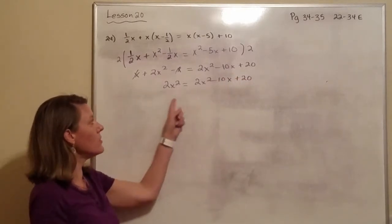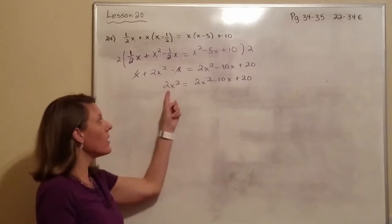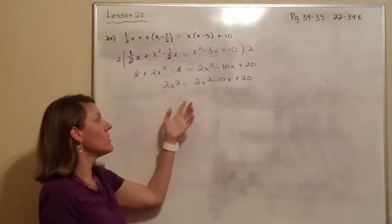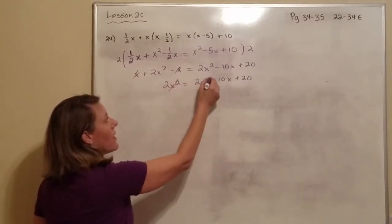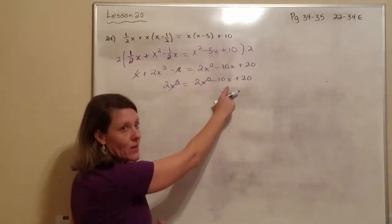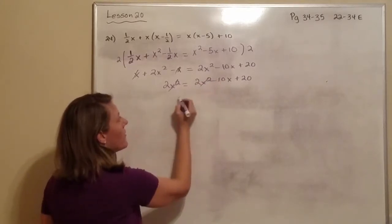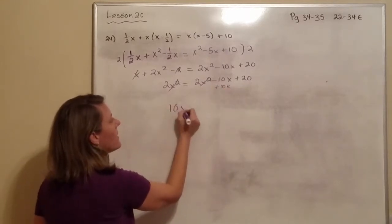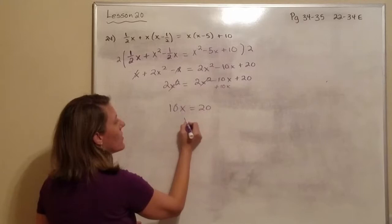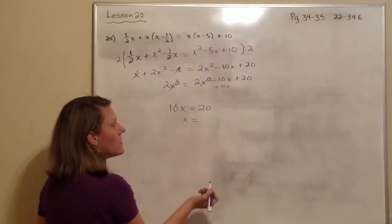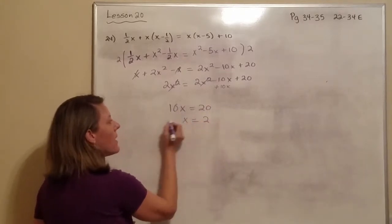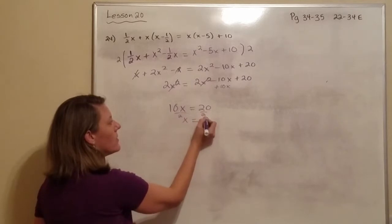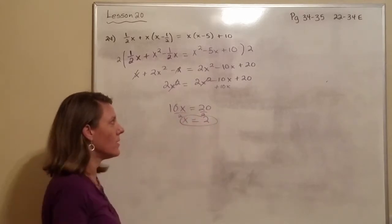Now, if we were to move this over, they would cancel out. So let's just cancel them out, but go ahead and move the X over, and so we have to add 10X to both sides. So 10X equals 20. So X equals 2, because we divided by 2.